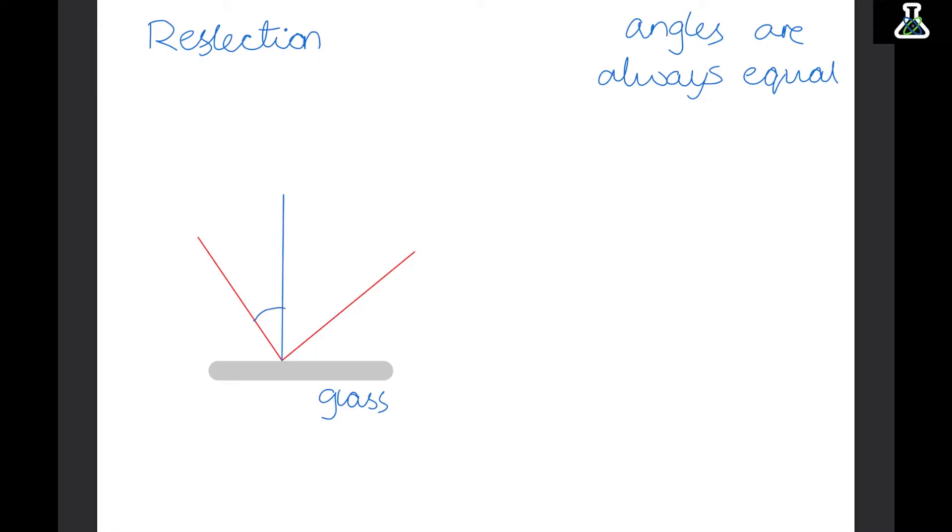The angle of incidence and the angle of reflection are always equal. Here is the angle of incidence - this is just the angle that the wave came into the new material. Here is the angle of reflection, and this is the angle that it bounces back off of the material at. These angles will always be equal.